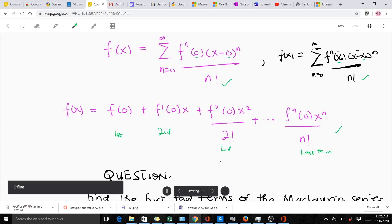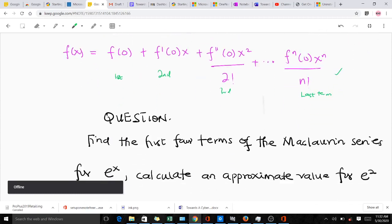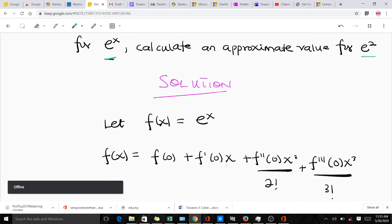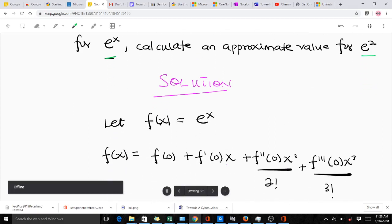Let's quickly take an example. The example says find the first four terms of the Maclaurin series of e^x and calculate an approximate value for e raised to the power two. You are supposed to find the first four terms of our Maclaurin series. Note that in this question, our function f(x) is e^x.